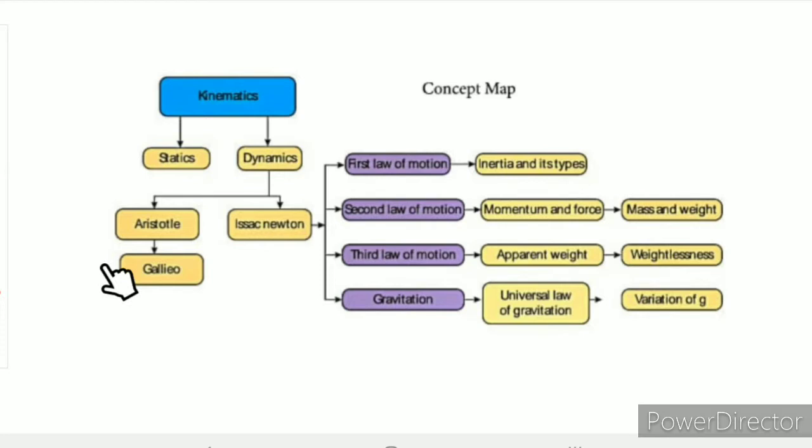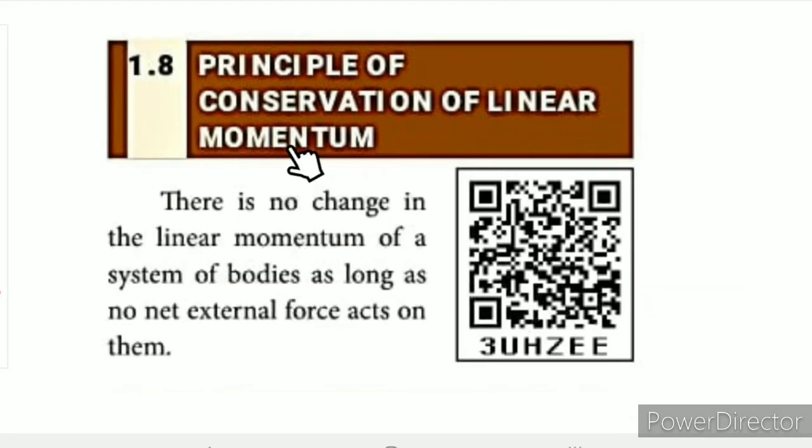The concept map shows: Part 1 is statics, Part 2 is inertia, Part 3 is linear momentum, Part 4 is first law of motion, Part 5 is second law of motion, Part 6 is impulse, Part 7 is Newton's third law, and Part 8 is the principle of conservation of linear momentum.